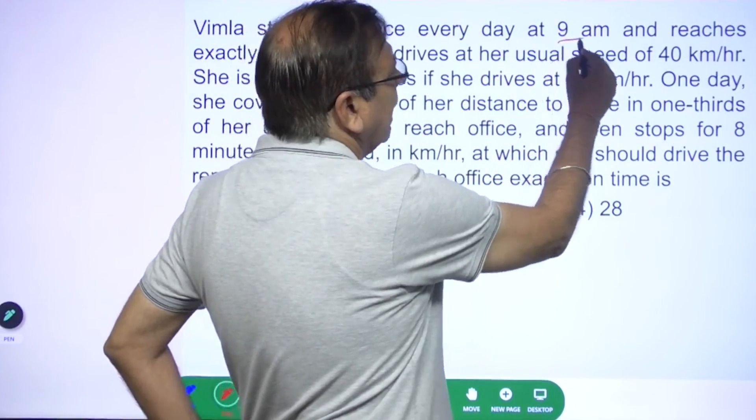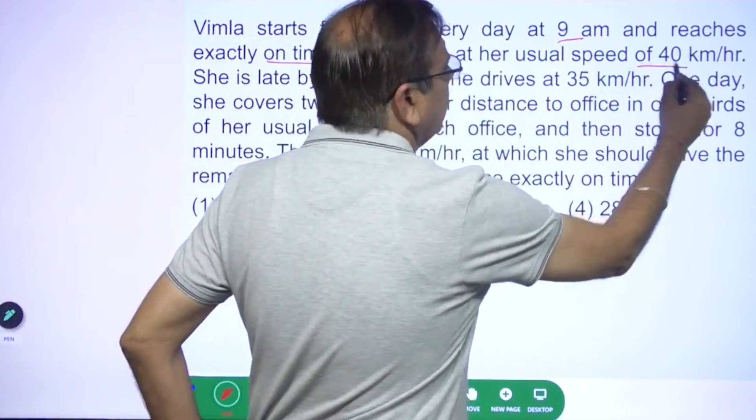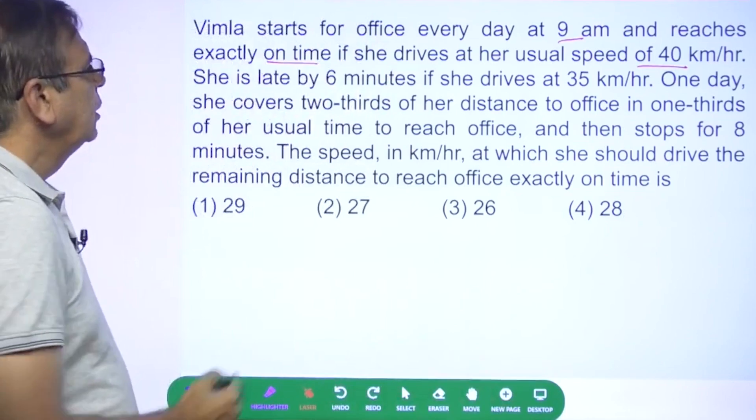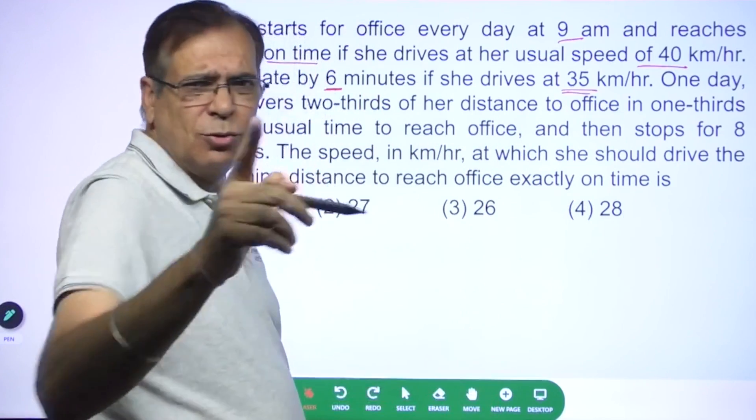Vimla starts for office every day at 9 a.m. and reaches exactly on time if she drives at her usual speed of 40 kilometers per hour. She is late by 6 minutes if she drives at 35 kilometers per hour.